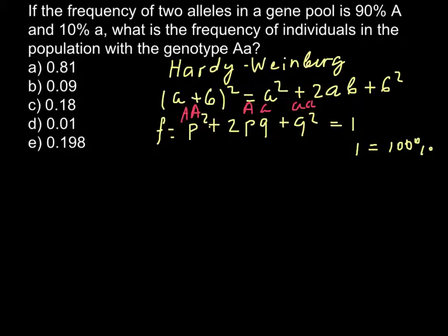How we are going to solve this problem: we just have to use this part of the formula in order to find what is the percentage of the heterozygous condition in the whole gene pool. We have to multiply 2 by 0.9 and by 0.1.